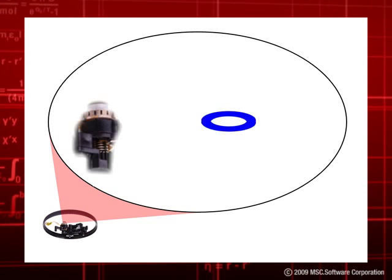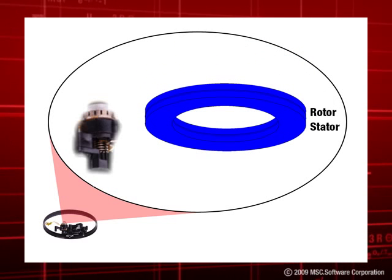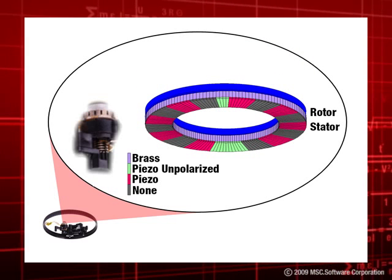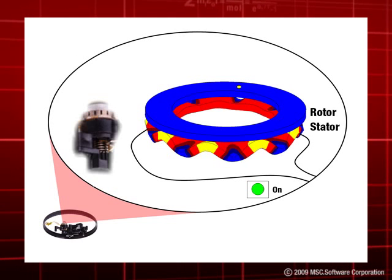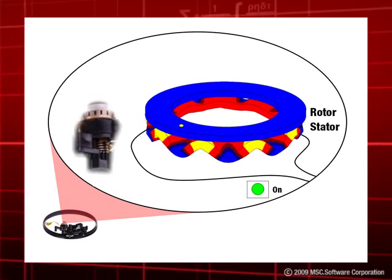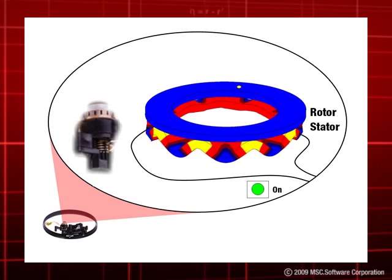In an ultrasonic motor, a rotor is positioned on a stator which contains a layer made of piezoelectric material. Electric pulses applied to the stator at specific frequencies generate a traveling wave that travels around its circumference.